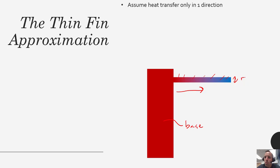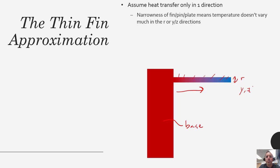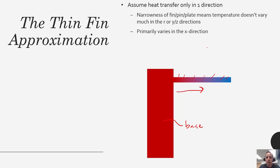By assuming heat transfer only in one direction it means that in the transverse direction we are assuming that it's isothermal. So if this is radially or if this is Y or Z then we're assuming that heat transfer doesn't vary in that direction, and we do that because this fin is so narrow. This fin or pin or plate is narrow so temperature doesn't vary much in the R or Y or Z directions because heat doesn't have very far to go before it's convecting out to ambient. Energy varies primarily in the X direction and we're just going to neglect any two-dimensional effects.